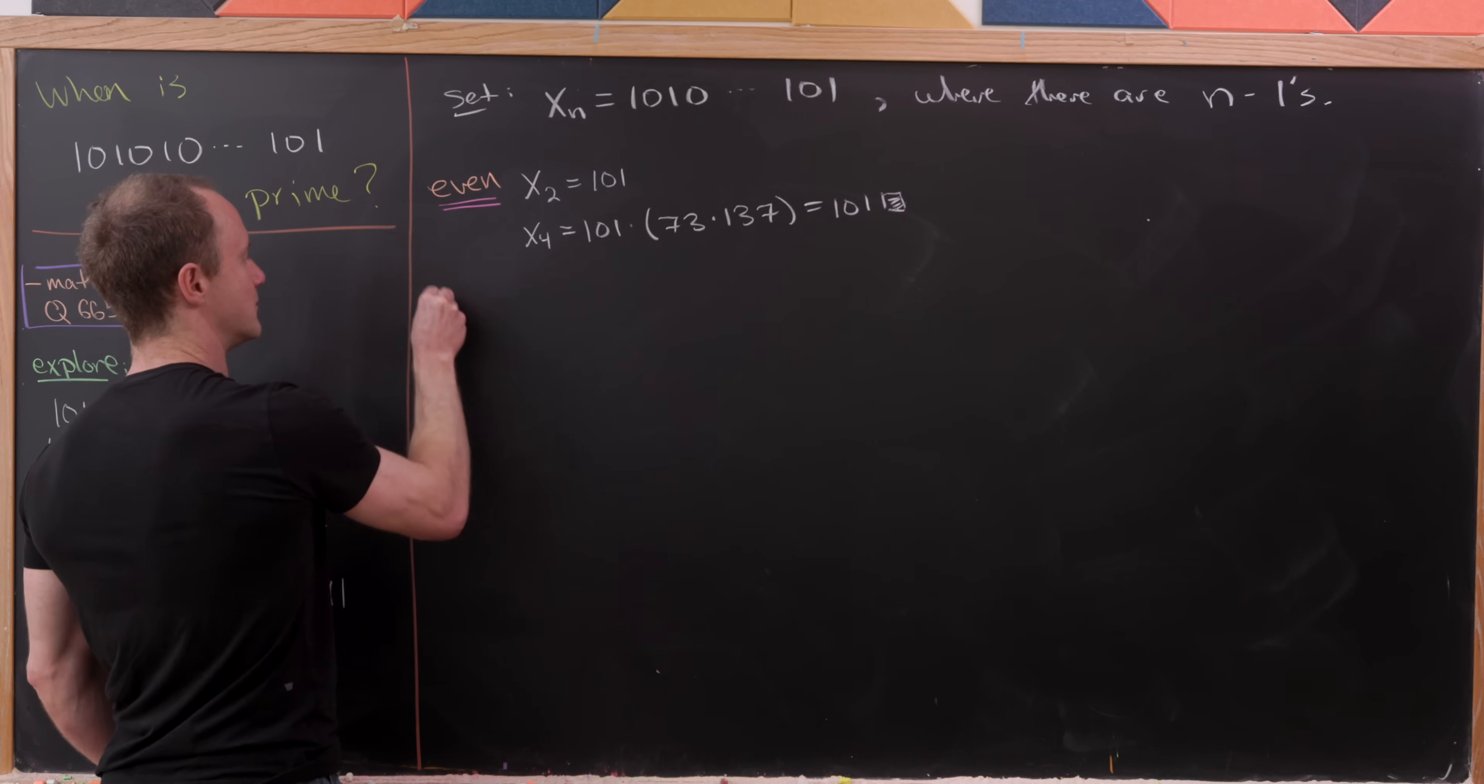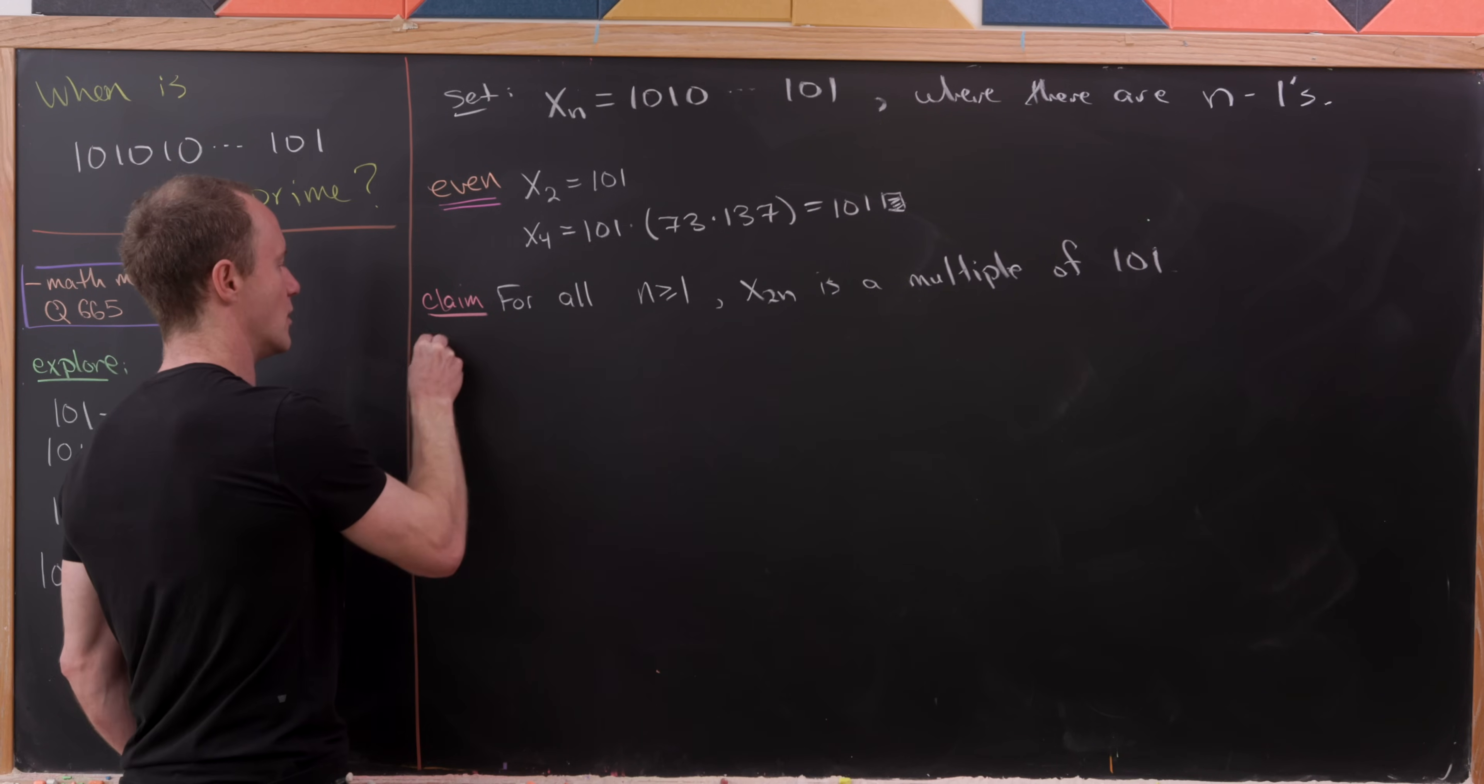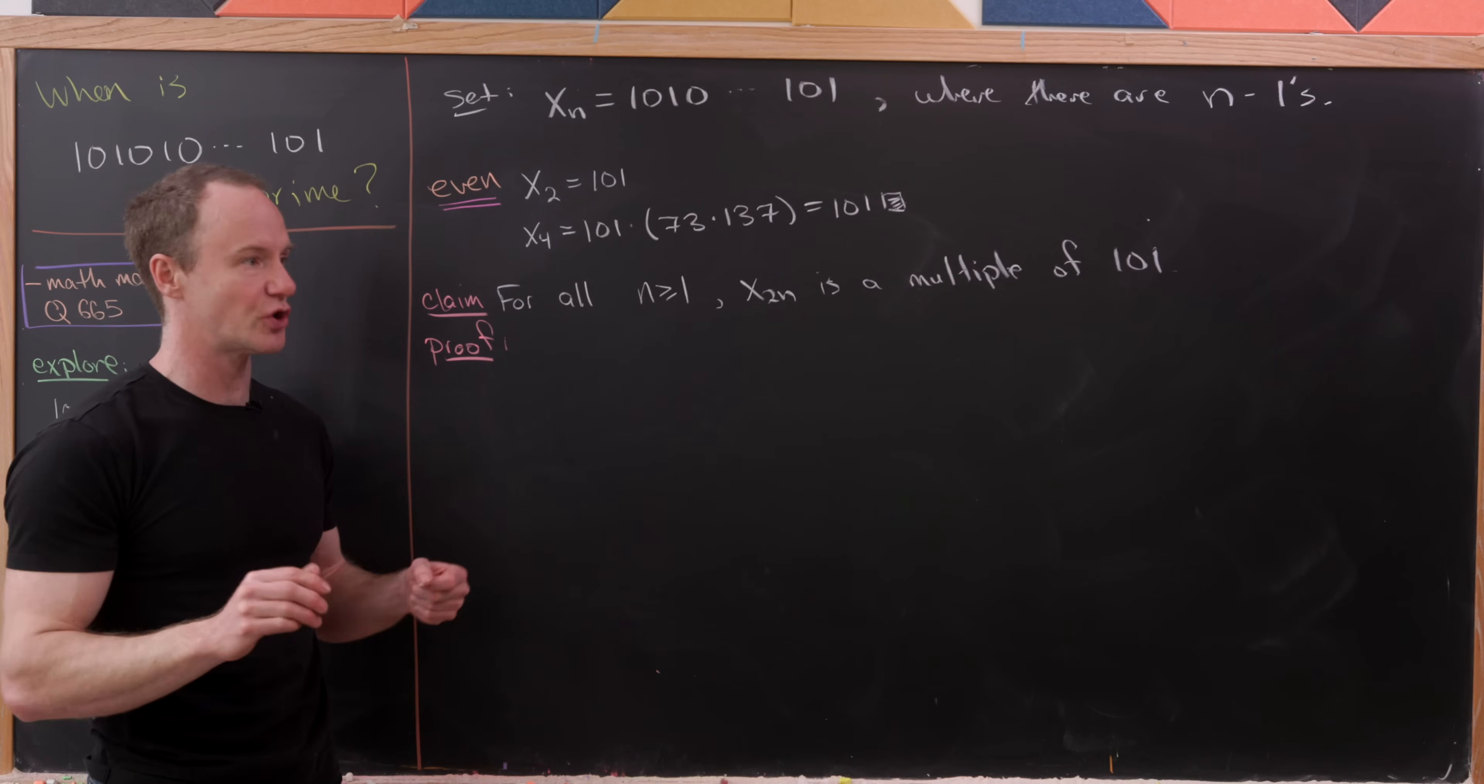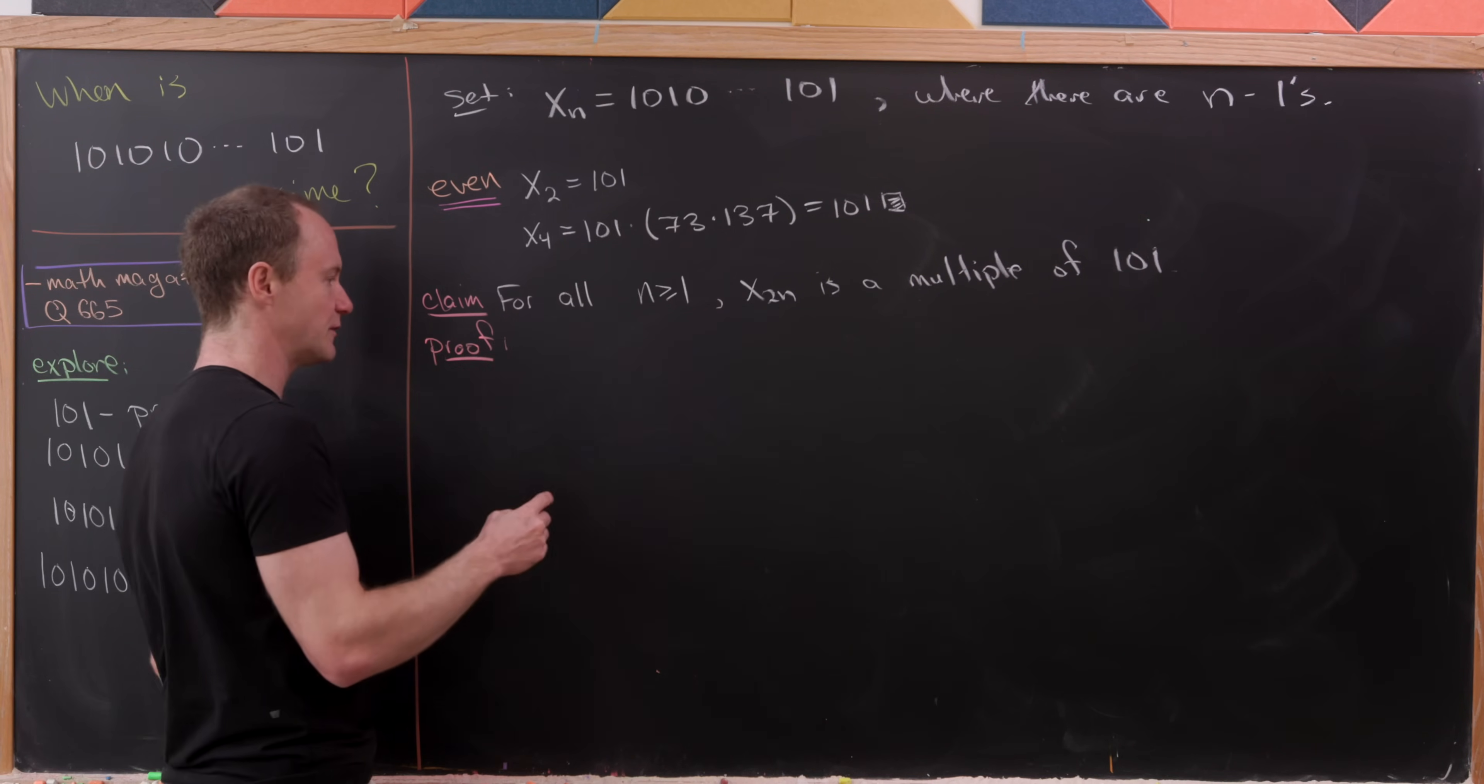So in other words, we want to show for all n greater than or equal to 1, x sub 2n is a multiple of 101. Which, of course, means that x sub 4, x sub 6, and so forth are not prime, because they'll be 101 times a necessarily smaller number.